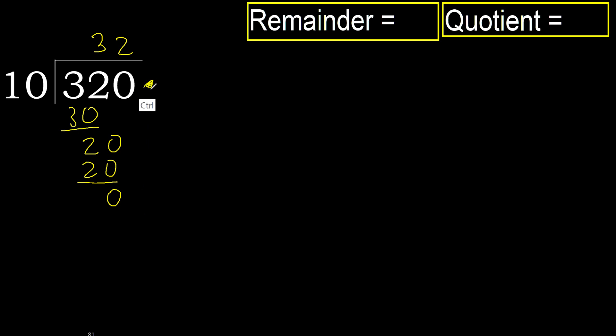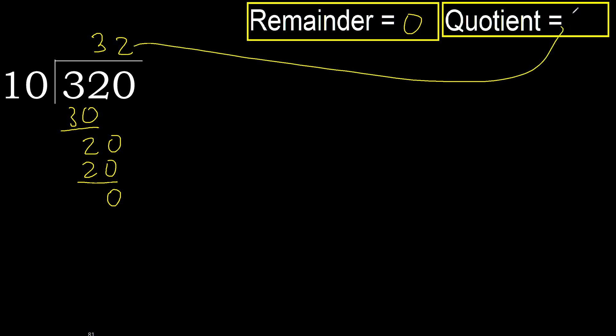That is not a number, therefore finish it. 320 divided by 10 is 32.